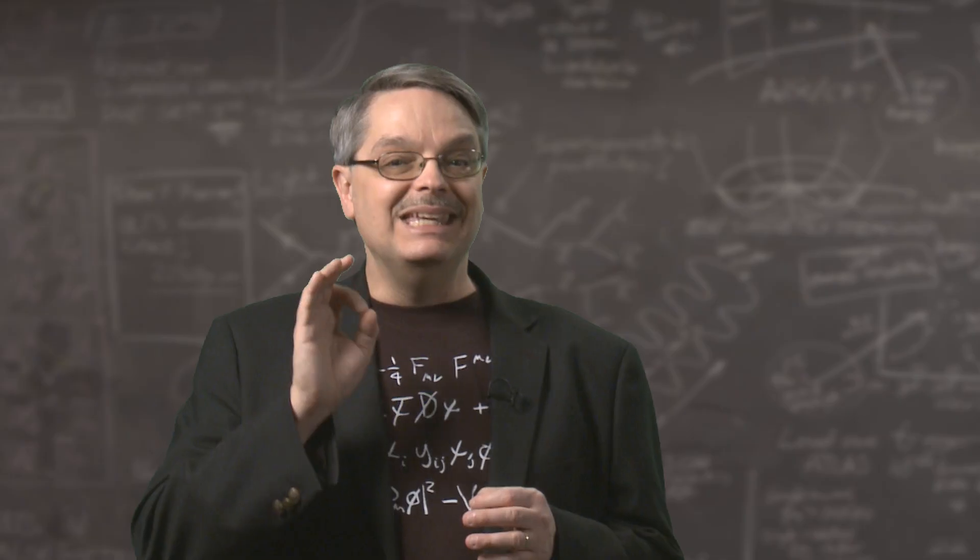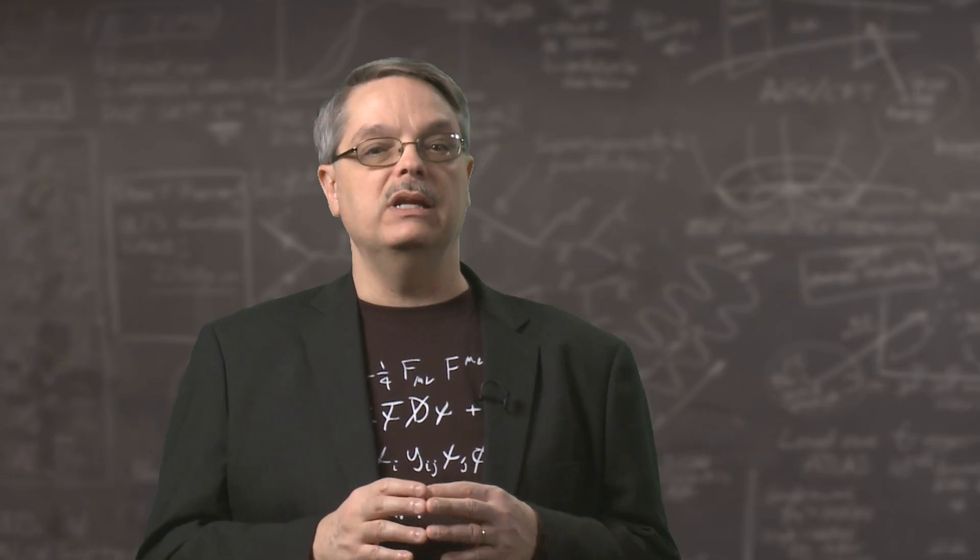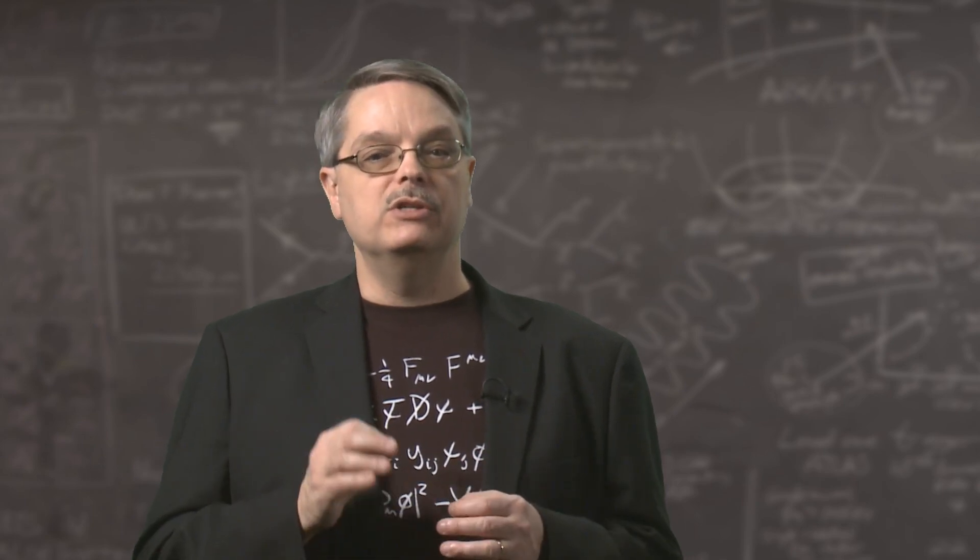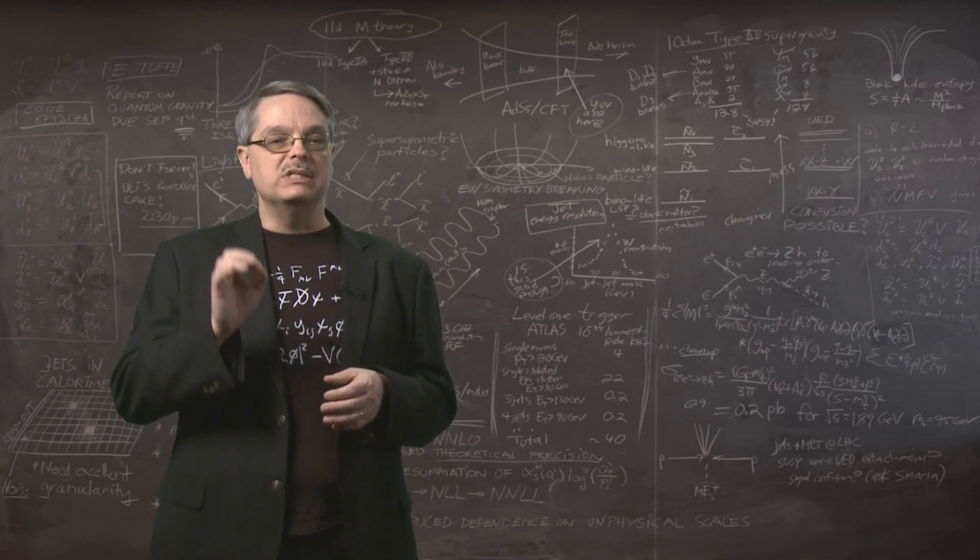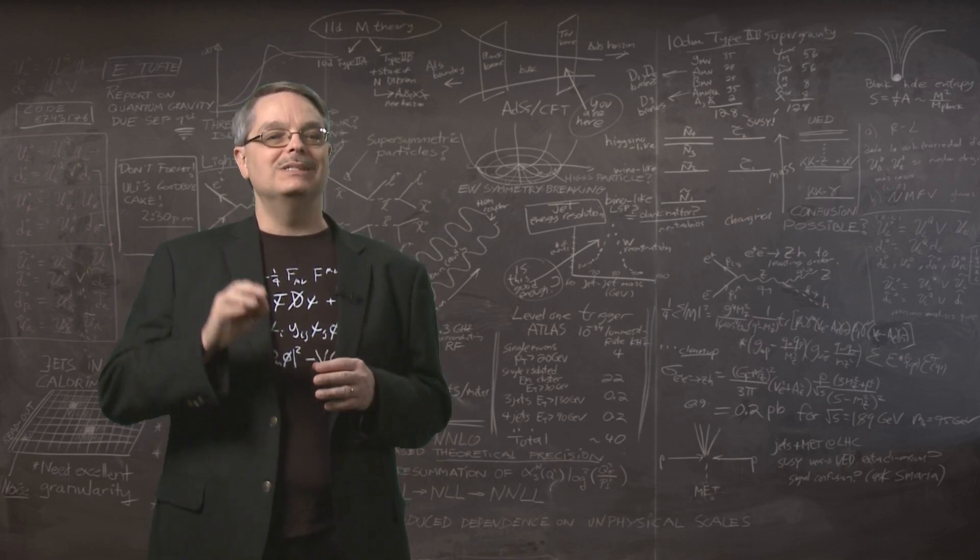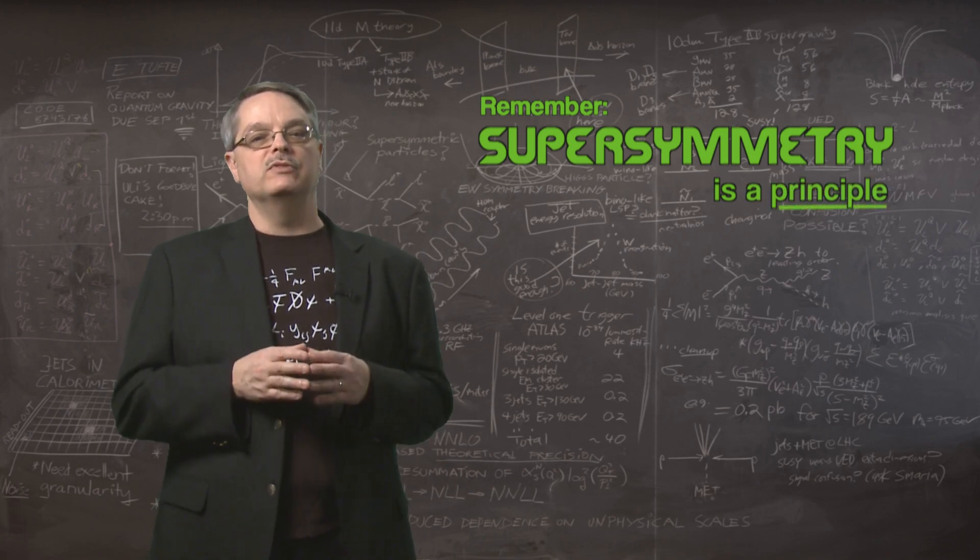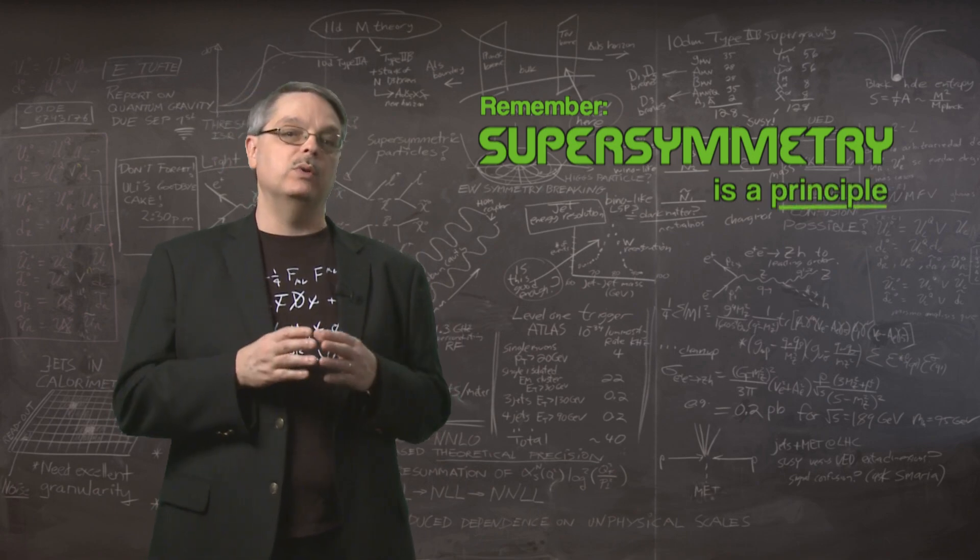Similarly, even if scientists rule out a particular supersymmetric theory, it might be that some other theory that treats matter and forces on equal footing is right. Disproving specific supersymmetric theories is possible, but to rule out the general principle of supersymmetry itself is actually quite difficult.